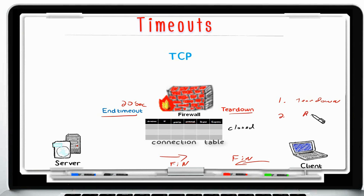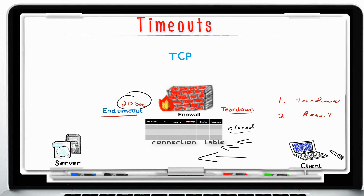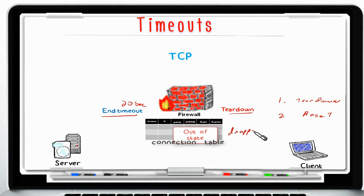A second reason a terminated connection can occur is during a connection reset, where either the server or client sends a reset packet to close the connection. When either of these occurs, the connection in the connection table is marked as closed, but the firewall does not delete it immediately — it gives a 20-second grace period in case there are any trailing packets being sent. Any late packets will still be allowed within those 20 seconds, and this value is refreshed as long as packets are being exchanged. After 20 seconds of an idle connection, it is completely removed from the connection table, and any packets arriving after that will be dropped as out of state.